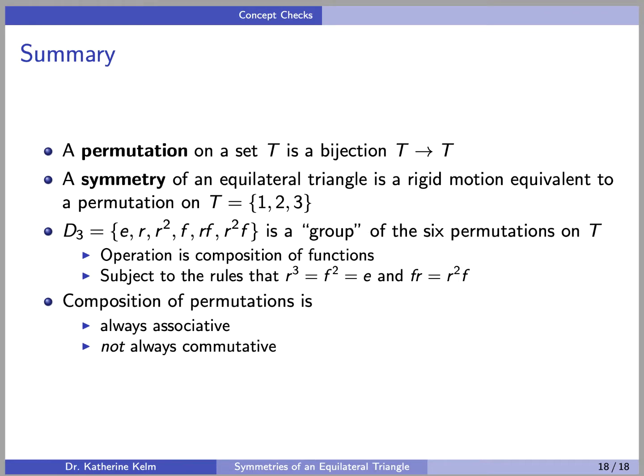Okay, so as a summary, a permutation on a set T is a bijection from T to itself. A symmetry of an equilateral triangle is a rigid motion equivalent to a permutation on T, where T is the set 1, 2, 3. D3 is a group of the six possible permutations on T.